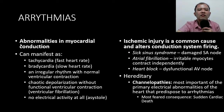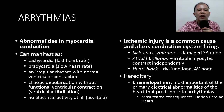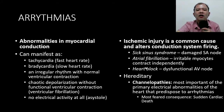Arrhythmias are abnormalities in myocardial conduction, thereby causing uncoordinated contraction of the atrium and ventricle. Ischemic injury is the most common cause of arrhythmias. Examples include sick sinus syndrome — with a damaged SA node — atrial fibrillation, and heart block. It can also be hereditary if caused by channelopathies.